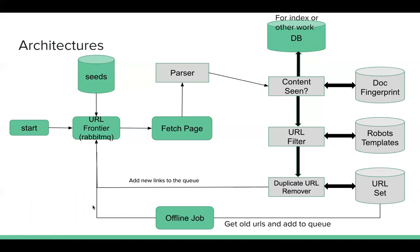For the revisit policy, I'm thinking we can add an offline job. We can get all the URLs from the URL set and add them back to the message queue. For each URL in the URL set, we can have a timestamp indicating the last time we visited it. If it's a pretty old URL, we can add it back to the queue.